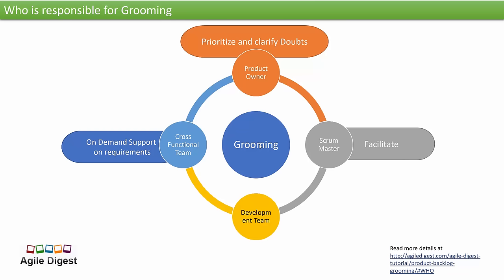The product owner always prioritizes the backlog and clarifies doubts asked by the development team. The scrum master facilitates the entire grooming session. The cross-functional team supports the development team for cross-functional dependencies and risk identification. The developer tries to understand the requirement, and once all clarification is clear, we do an estimation — through planning poker, complexity bucket, or similar — and assign story points. Once we have everything, we mark the story as groomed and move to the next story. Everyone — product owner, scrum master, development team, and cross-functional team — mutually makes the story ready for the next sprint planning.